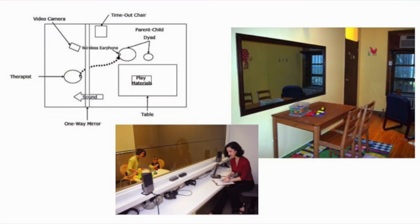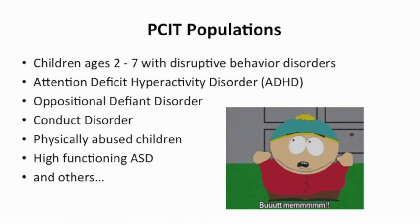Here we have a representation of what some of the PCIT rooms look like. There's a two-way mirror that allows for separation between the therapist and the parent and child. The small picture on the bottom shows the therapist with a microphone talking to the parent using what they call a bug in the ear, which is a small receiver in the parent's ear to pick up the therapist's coaching.